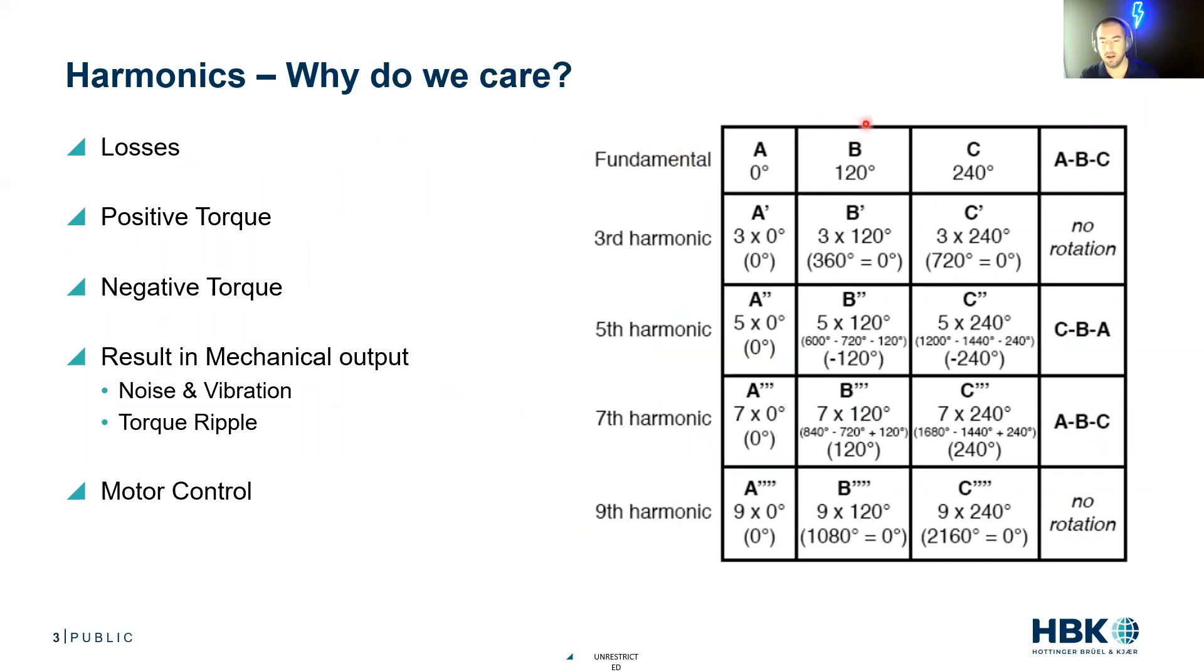For those who know me, I'm not the biggest math guy, but let's take the fundamental. Our three phase motor has windings distributed by 120 degrees. Phase A is at zero, phase B is at 120, and phase C is at 240. Our order of rotation is ABC. This is positive torque.